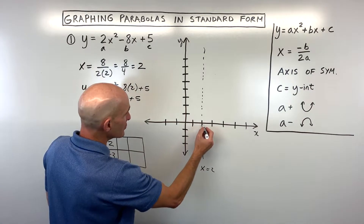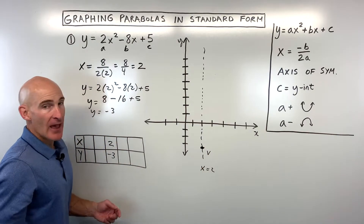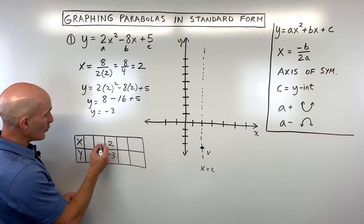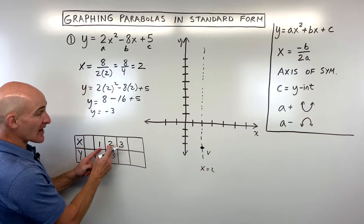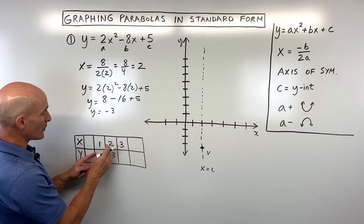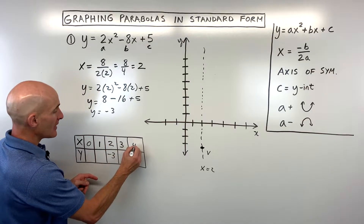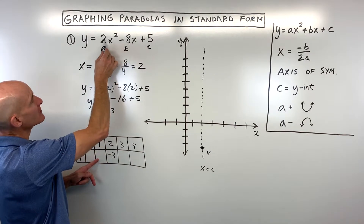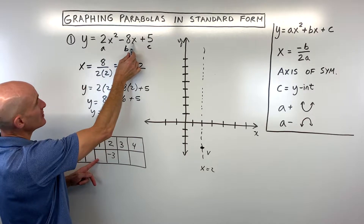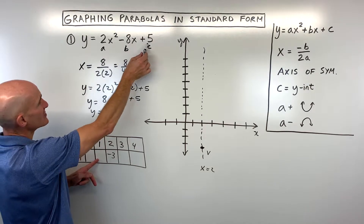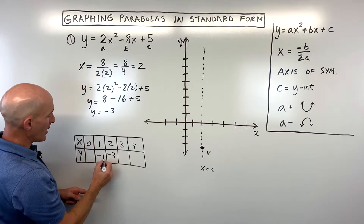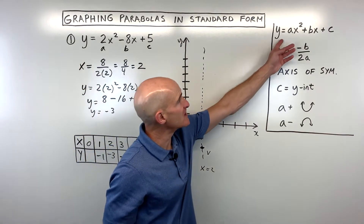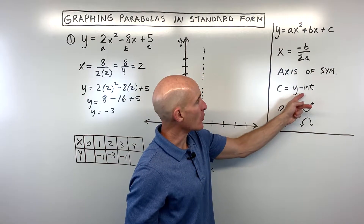Let's plot that on our graph. So the point (2, negative 3) is our vertex. Because the parabola is symmetric on both sides of the axis of symmetry, we can make a table and pick some points on either side of this x-coordinate — one below and one above, or two below and two above, because these values are going to be the same. Plugging in 1 for x: 1 squared is 1, times 2 is 2, minus 8 times 1 is 8 — so 2 minus 8 is negative 6, plus 5 is negative 1. And the c value is our y-intercept — that's where it crosses the y-axis.